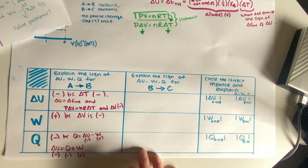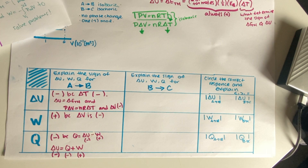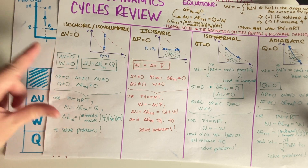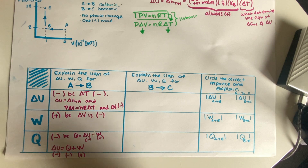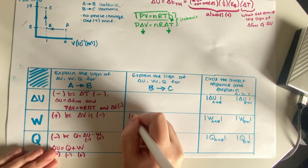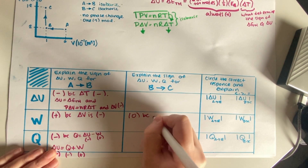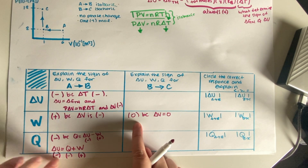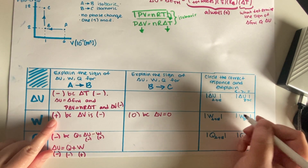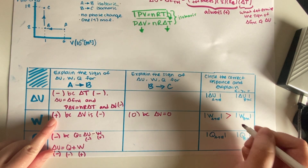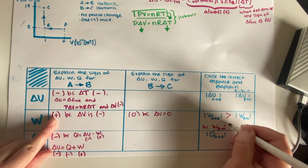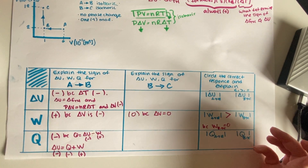Now we move on to B to C, which is an isochoric process, meaning the volume is kept constant. Because the volume is kept constant, the work is equal to zero — there is no change in volume, so delta V equals zero. Since W equals zero and the other terms are positive numbers, the magnitudes compare accordingly.